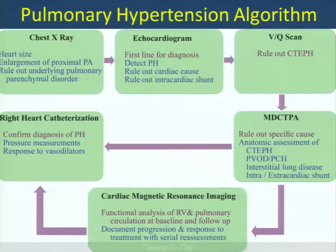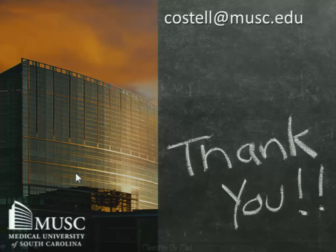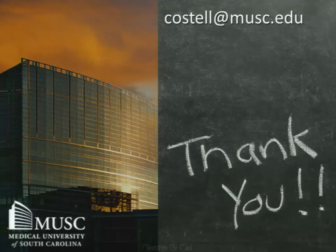Cardiac MR is usually reserved to provide precise functional analysis of the right ventricle and pulmonary circulation, both at baseline and on follow-up, providing tools for prognostic assessment with therapies. Right heart catheterization is used to confirm the diagnosis and assess response to various therapies. Thank you for your attention — I hope this provides you with insights into something that is an interesting and evolving phenomenon.